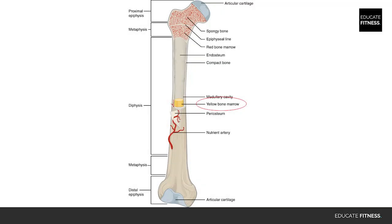Finally, a quick note on red marrow and yellow marrow. Yellow marrow facilitates the storage of fat, while red bone marrow's primary role is the production of blood cells. Red marrow functions in the production of various types of blood cells and is found in cancellous bone tissue.